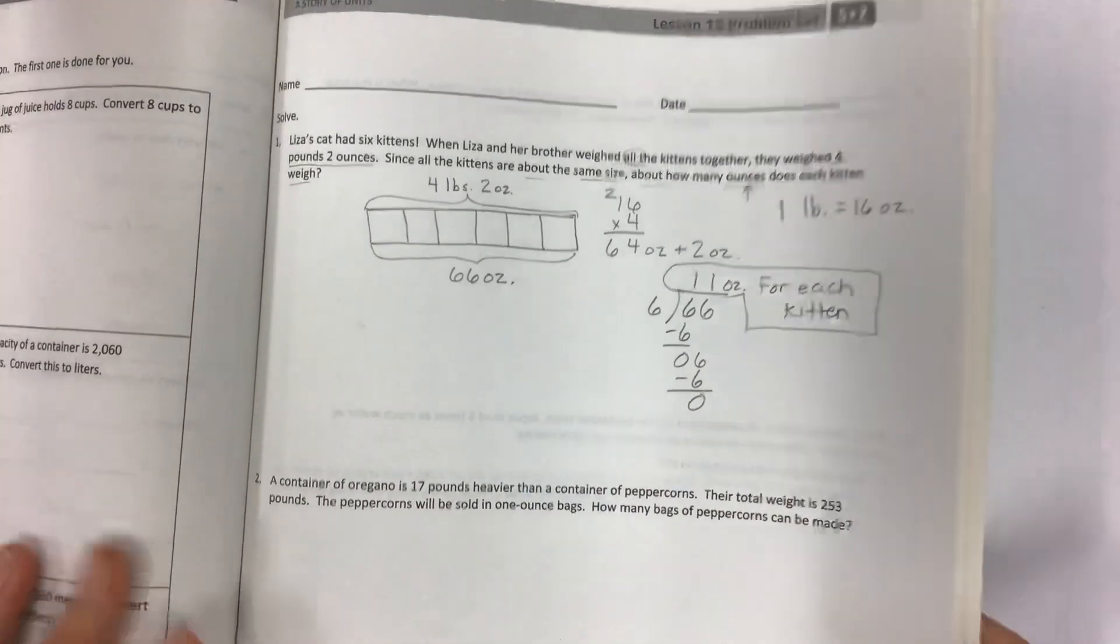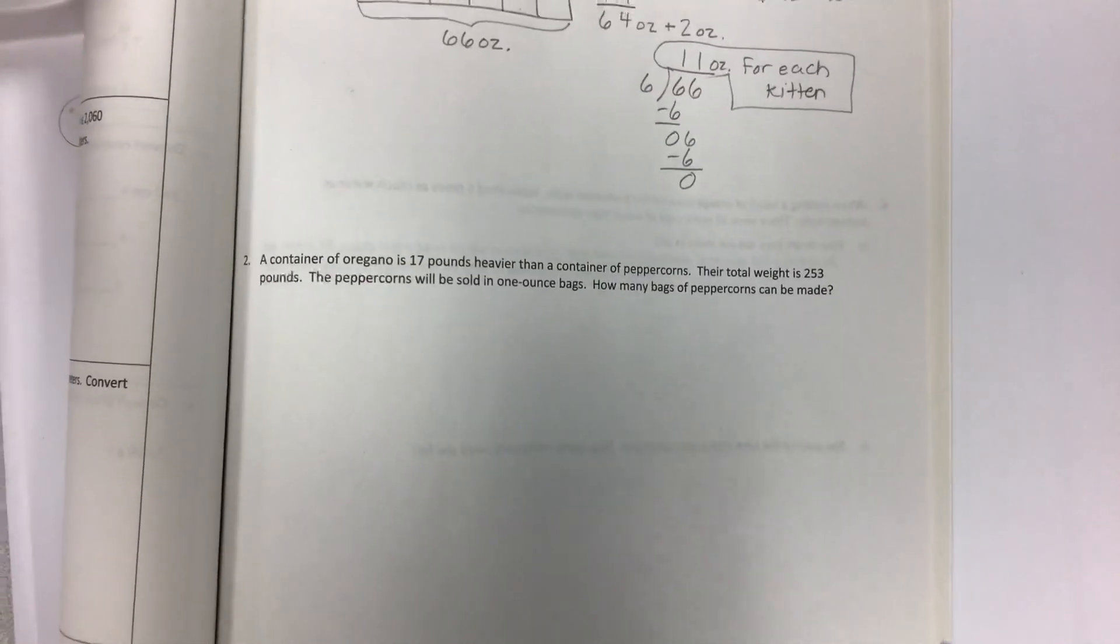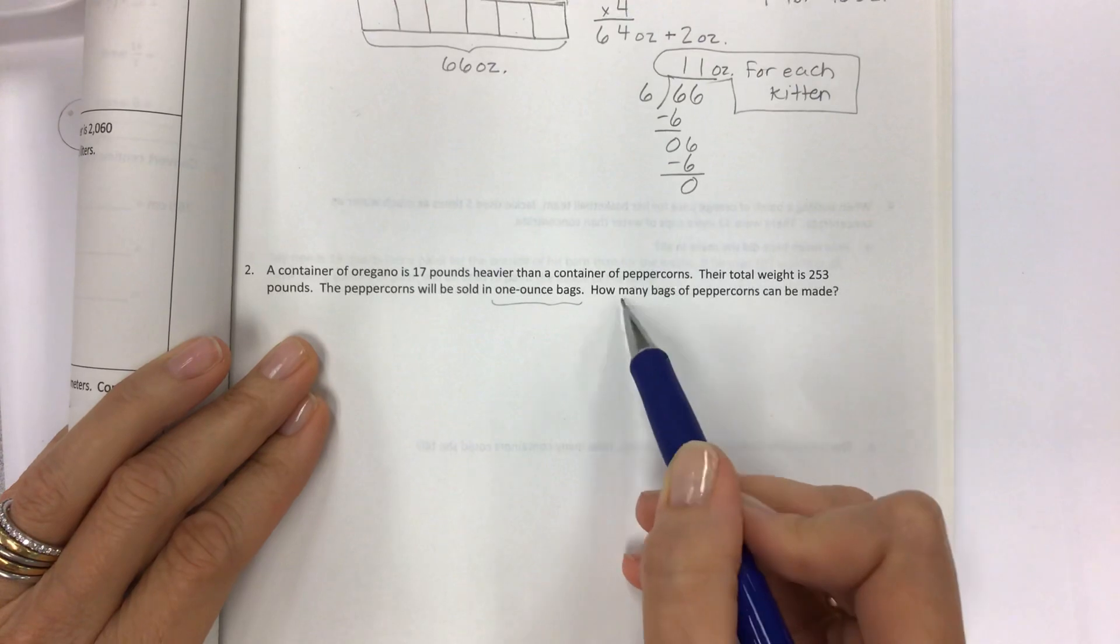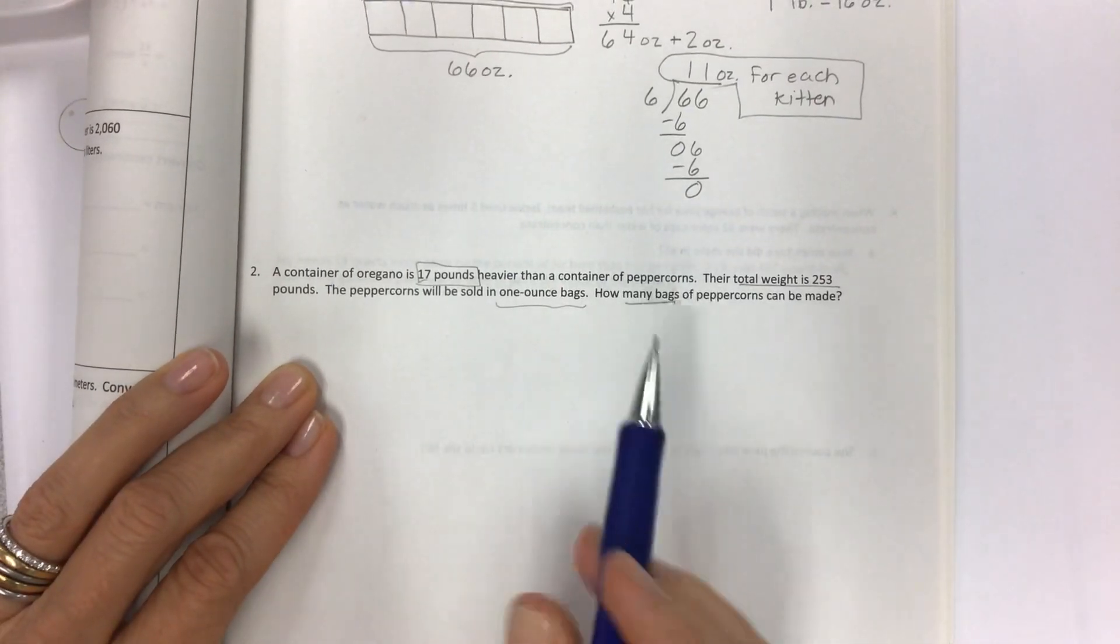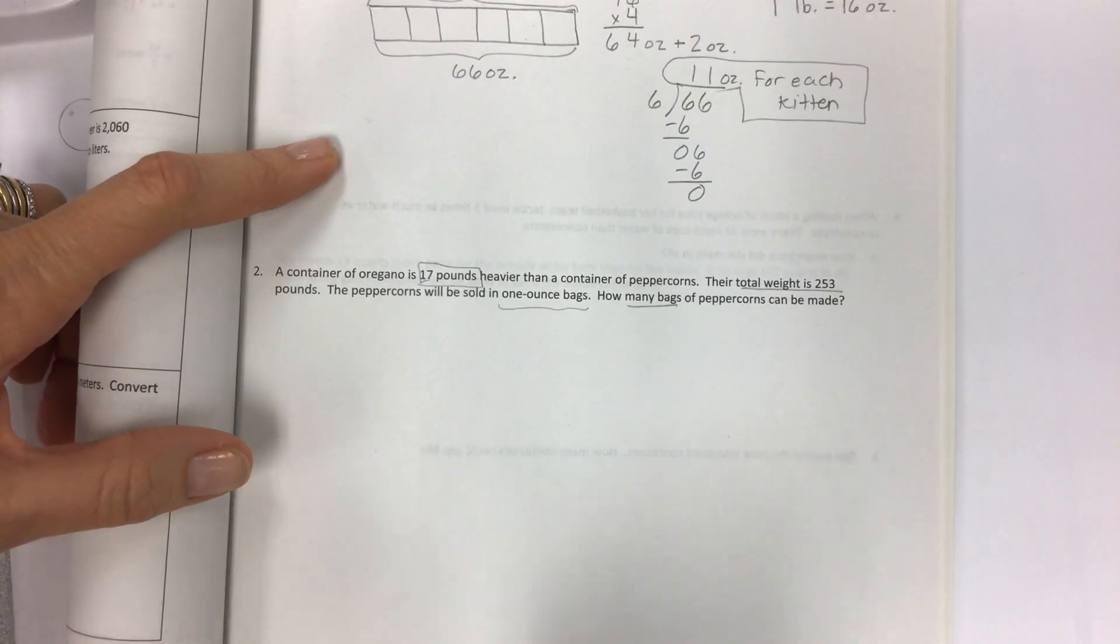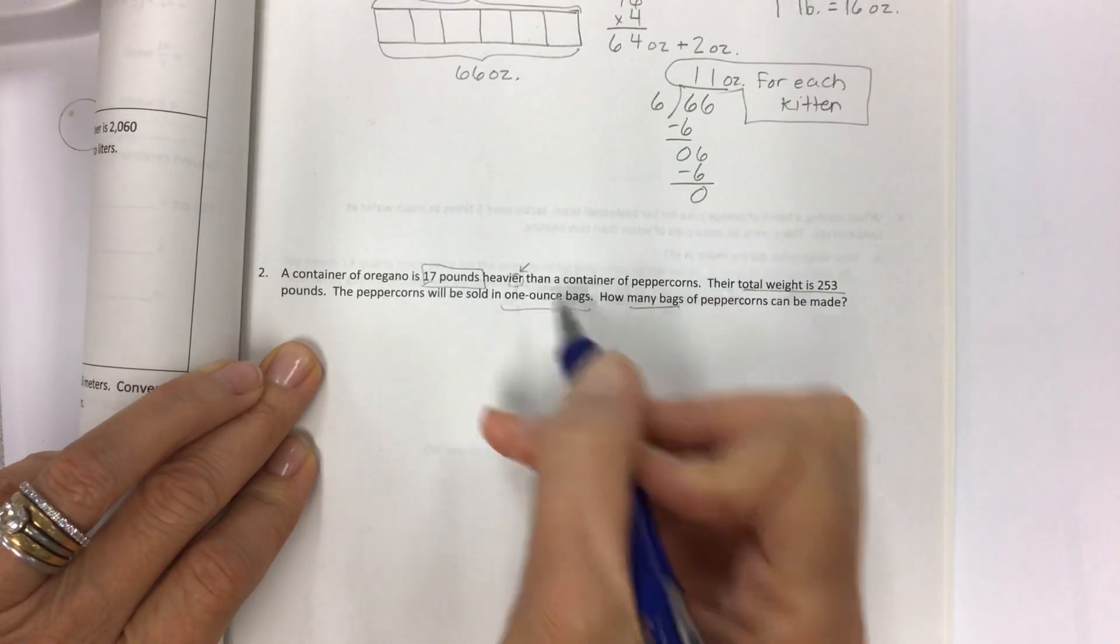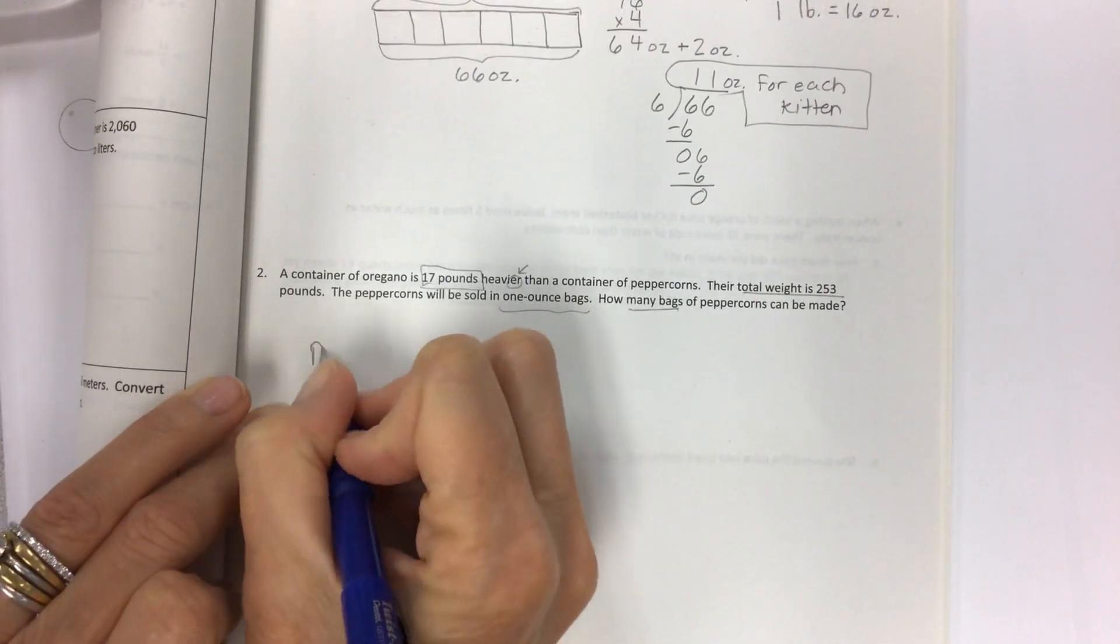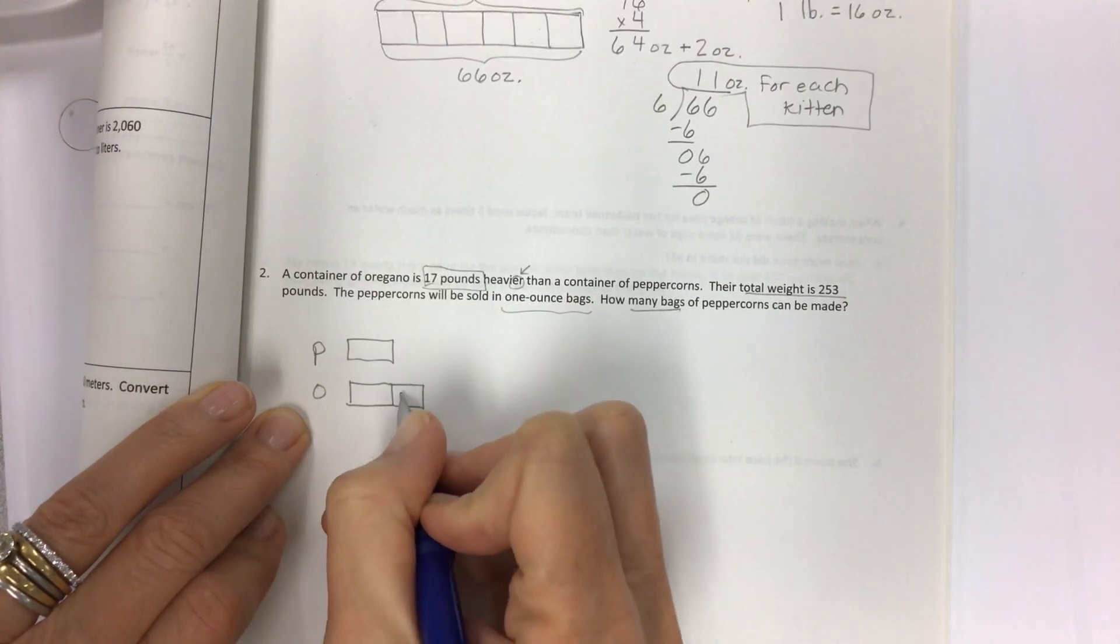So number two. A container of oregano is 17 pounds heavier than a container of peppercorns. Their total weight is 253 pounds. The peppercorns will be sold in one ounce bags. How many bags of peppercorns can be made? So honestly, when I was a kid, this would be one problem that I would just run away from and be like, I'm going to get that one wrong because I don't know how to do it. But if you use a tape diagram, you're just going to have all the answers here.